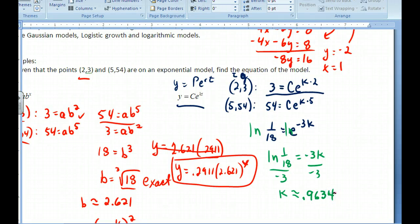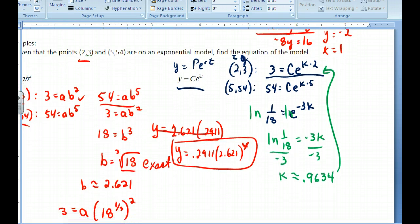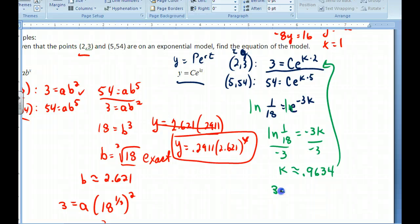So that's my k. How do I find my C? Well, I go back to one of these formulas, probably this one, and plug it back in, back substitution. So I'm going to get 3 = C times e^(0.9634 times 2).